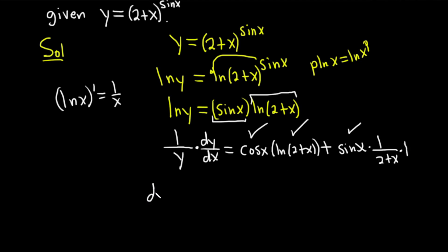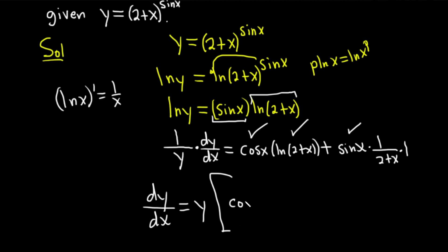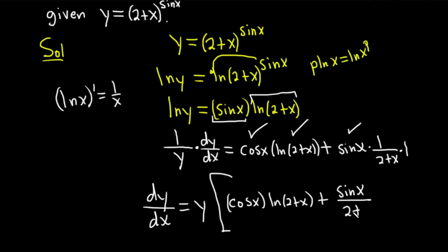Now multiply both sides by y. So dy/dx equals y times [cosine x times ln(2 plus x) plus sine x over (2 plus x)]. Really crazy looking answer — really fun!